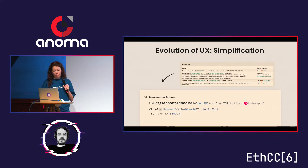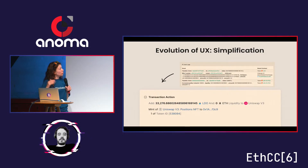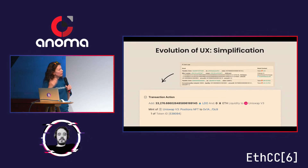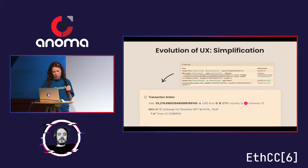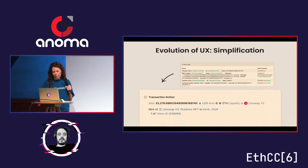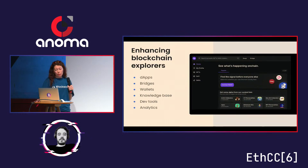A lot of information has been simplified. For example, transaction actions were added in many explorers to better match what the user did in the protocol with what is shown in the explorer. In the first screenshot you can see how it looked before — now you can easily understand what the user actually did in the protocol. Here, someone added liquidity in LIDAR tokens to Uniswap V3 and an NFT token representing this position was minted. Before, it was really hard to understand the outcome of the transaction. Explorers have become more and more complex in terms of functionality.